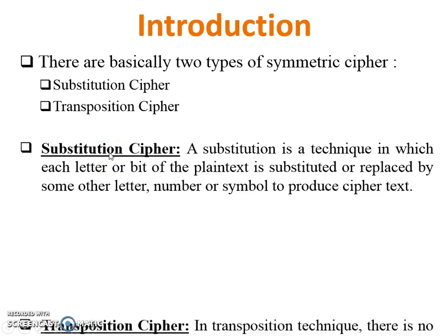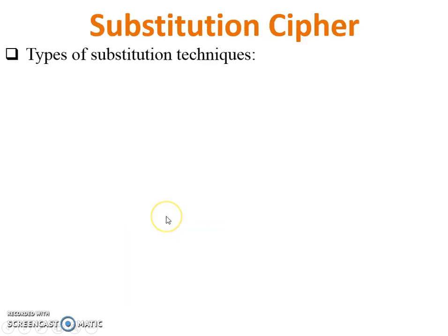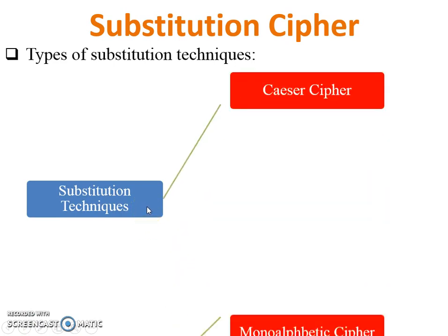Second one is transposition. Its name itself suggests not a substitution - just change the position of given letters or numbers, so it generates transposition cipher. Types of substitution techniques: first one Caesar cipher, monoalphabetic cipher, polyalphabetic cipher...